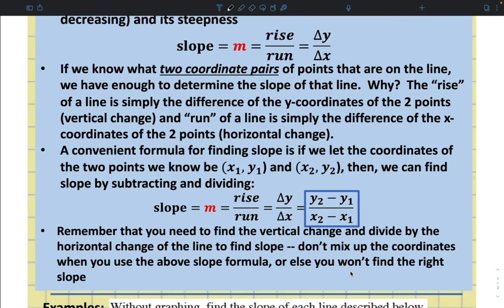Remember that you need to find the vertical change and divide by the horizontal change of the line to find slope. Don't mix up the coordinates when you use the above slope formula, or else you won't find the right slope.